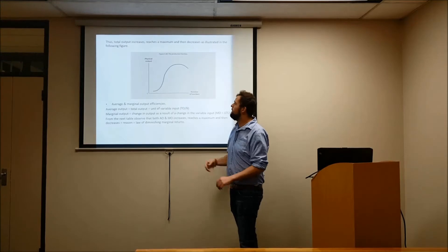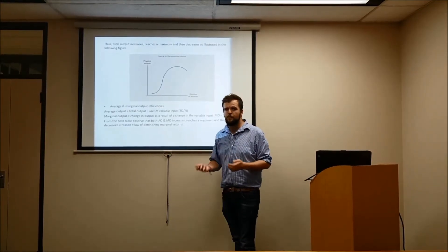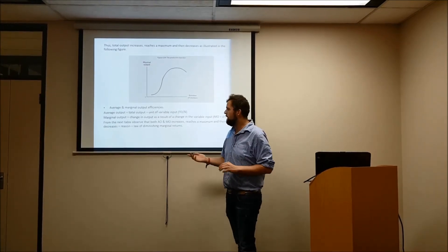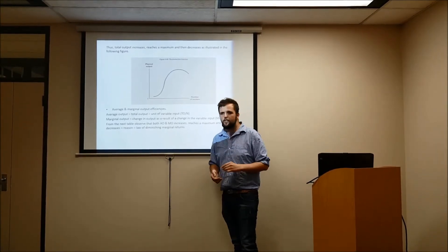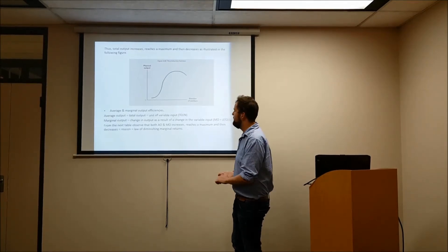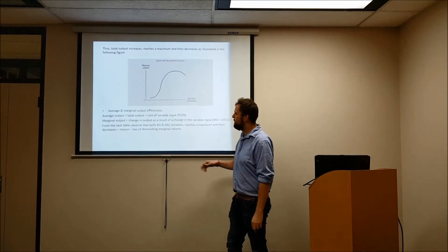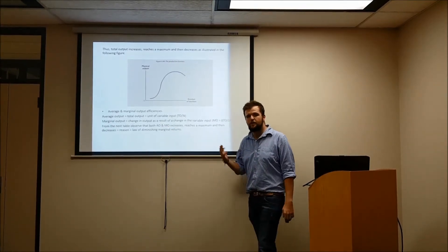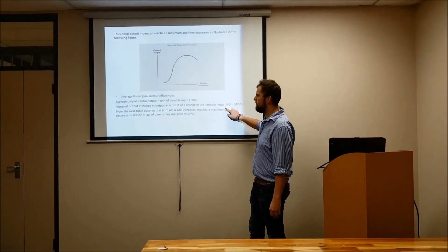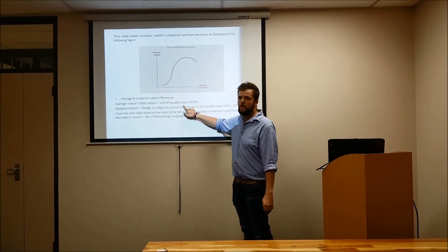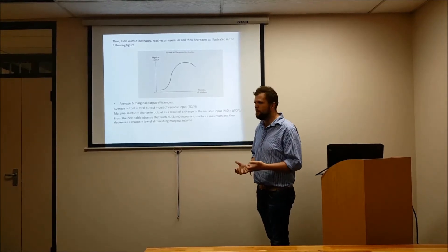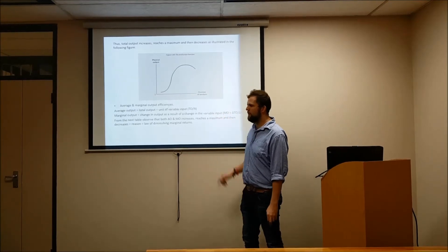Let's look at the two different types of output that measure efficiencies. First is the average output efficiency — easy to calculate: it's the total output divided by the unit of variable input. This is an output-to-input ratio showing what output you get given the labour put in. Then we have the marginal output, which is the change in output over the change in input. The key difference is that marginal output measures the change in output to input, while average output is the total output divided by total input.